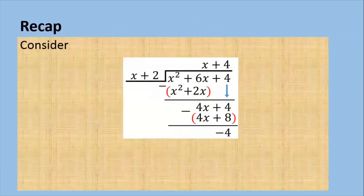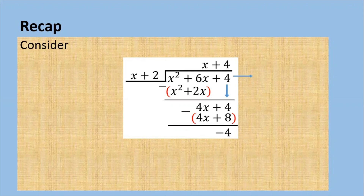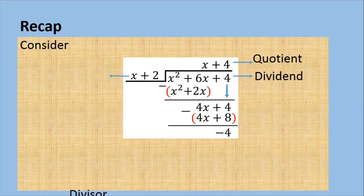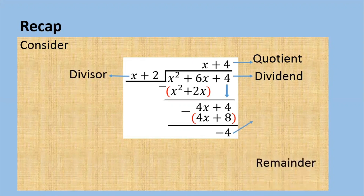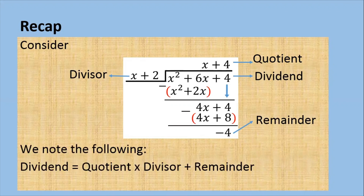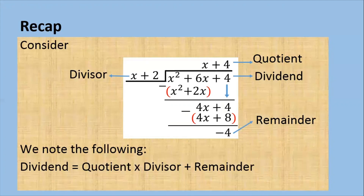A quick recap. Remember, we did that long division in the last video. So x squared plus 6x plus 4, that's what we call the dividend. x plus 4 is the quotient, x plus 2 is the divisor, and negative 4 is the remainder. We note the following: the dividend will be equal to the quotient multiplied by the divisor plus the remainder.